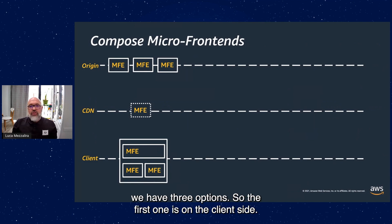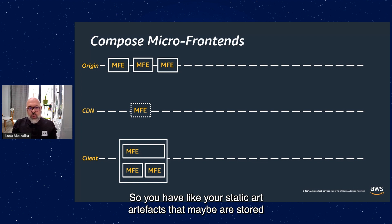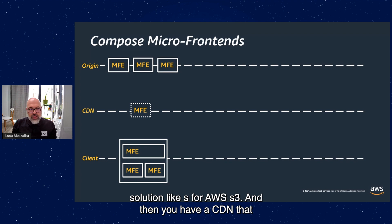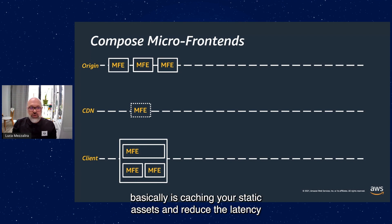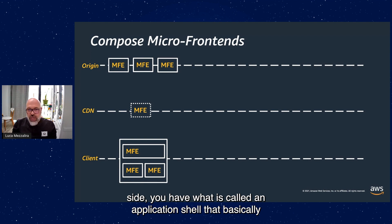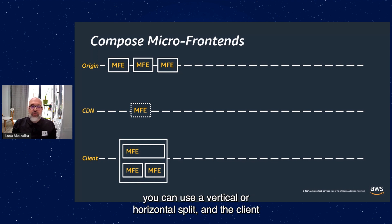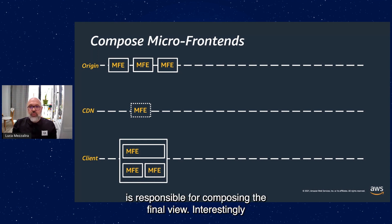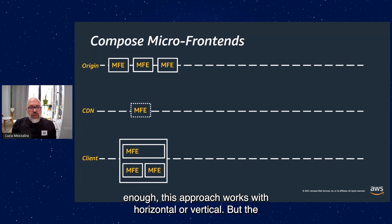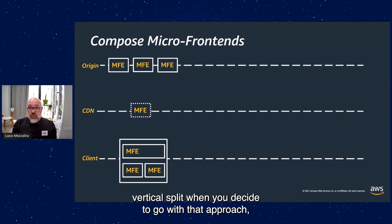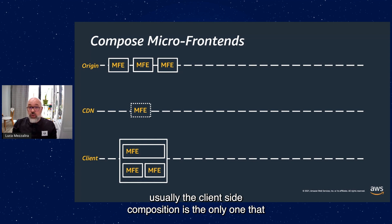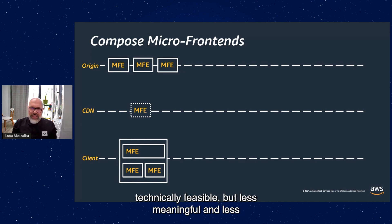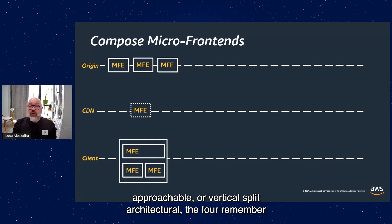When we talk about composition, we have three options. The first is client-side composition: you have static artifacts stored in an origin — perhaps served by an application server or AWS S3 — and then a CDN caching your static assets and reducing latency. On the client side, an application shell composes the different micro-frontends. This approach works with horizontal and vertical splits, though for vertical split, client-side composition is typically the only one you should pick, as the others are less meaningful despite being technically feasible.